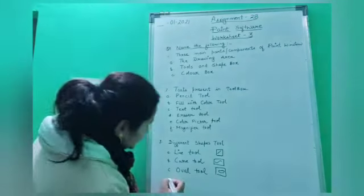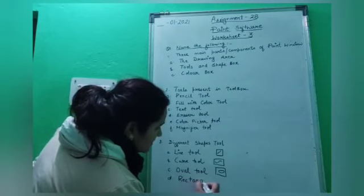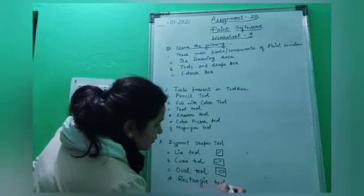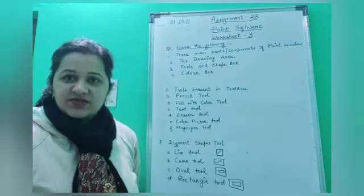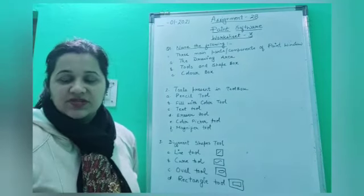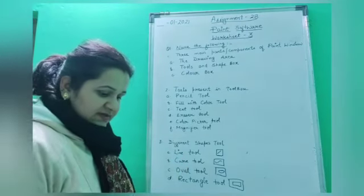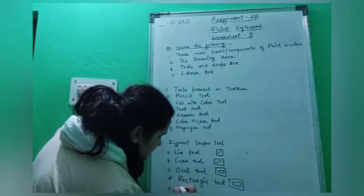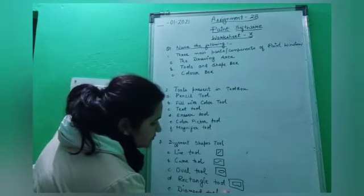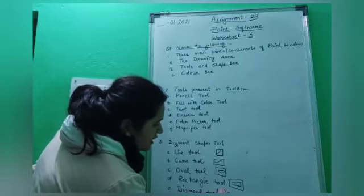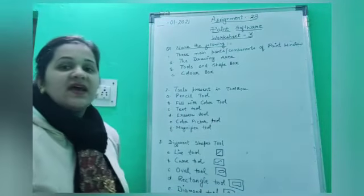Next tool is the rectangle tool. If you want to draw square shapes or any rectangular shape, then you would use this rectangle tool. Next is diamond tool — if you want to draw diamond shapes of different sizes, then you would use this diamond tool.